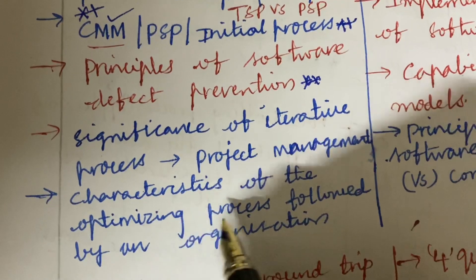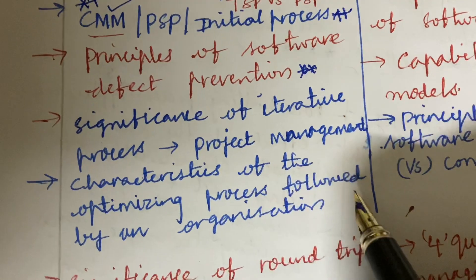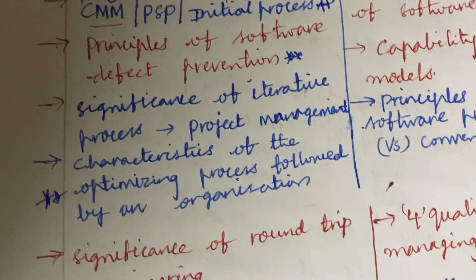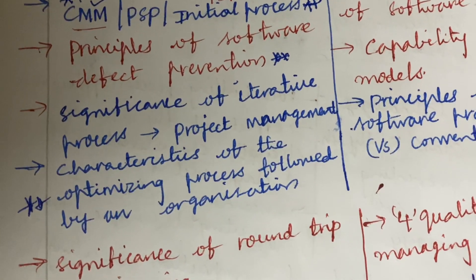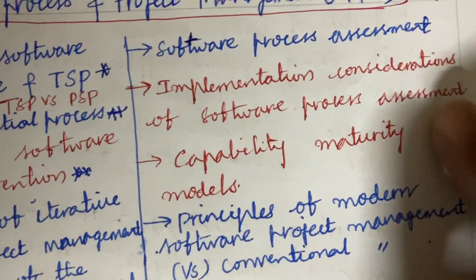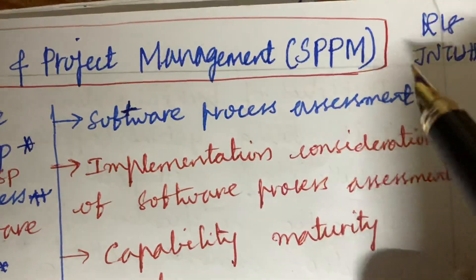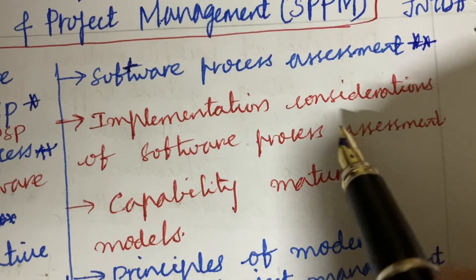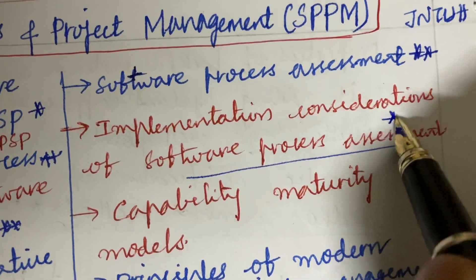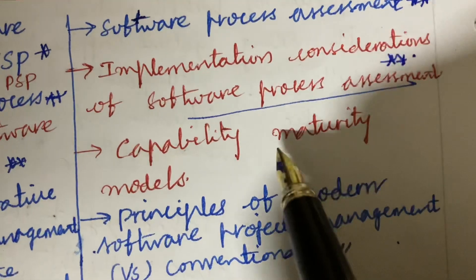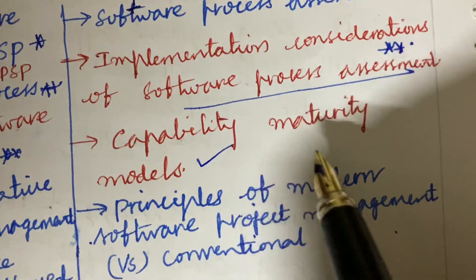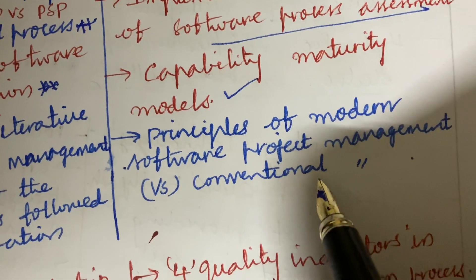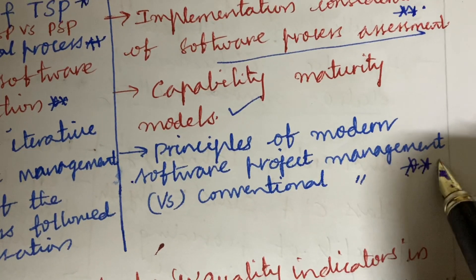The significance of iterative process related to project management and the characteristics of the optimizing process followed by an organization is also said to be a top most question. Dear students, this subject is all about theory — you are supposed to work out very neatly in point-wise; do not write in paragraphs. Software process assessment may also be a five-mark question. Implementation considerations of software process assessment and capability maturity models are top most questions. Principles of modern software project management versus conventional project management is said to be one of the third questions in the paper.